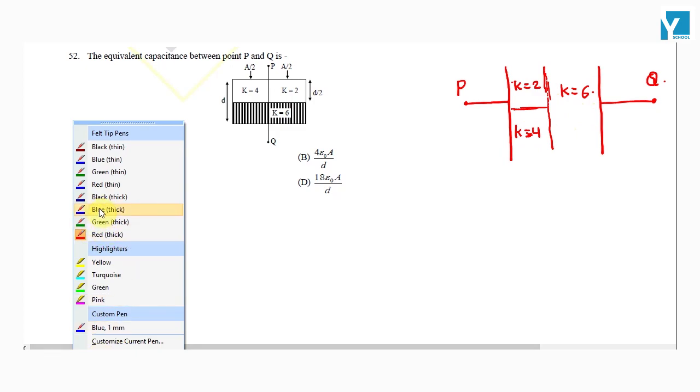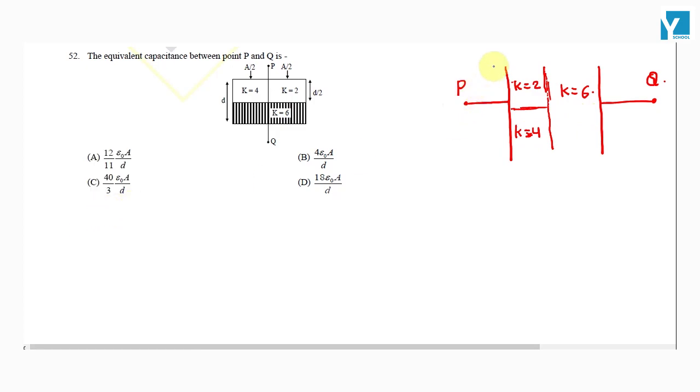This configuration effectively has three capacitors: this is C1, this is C2, and let's say this to be C3.